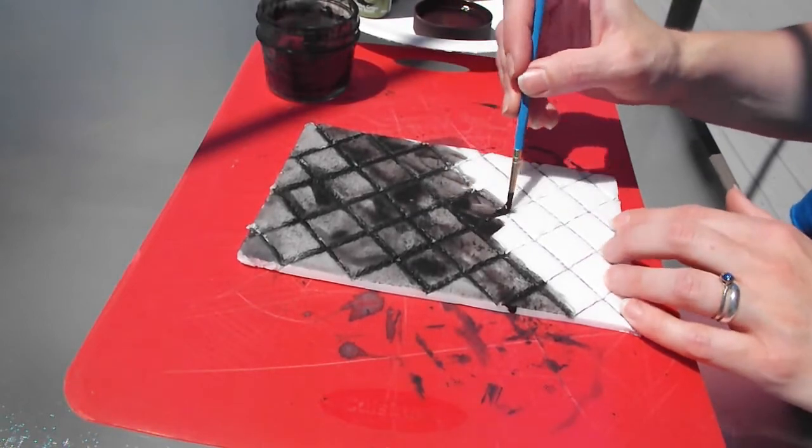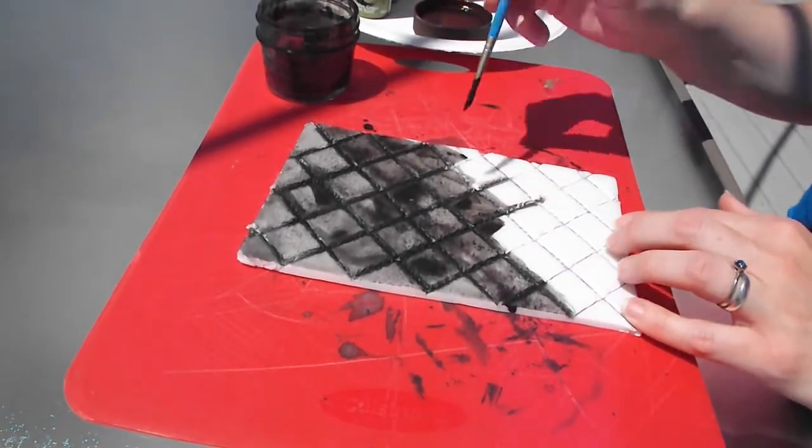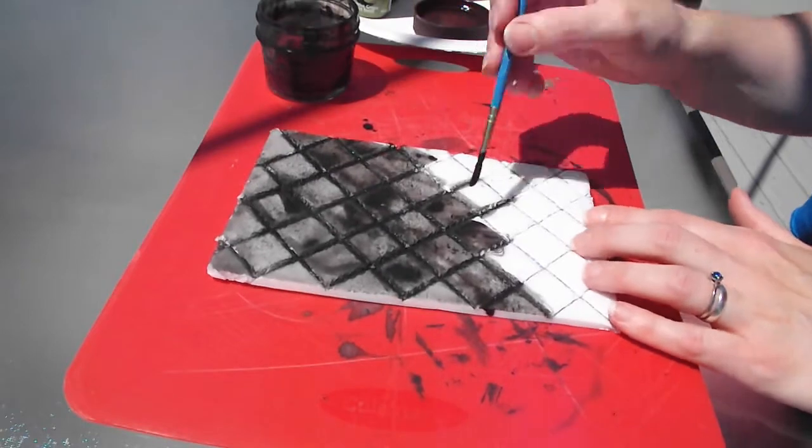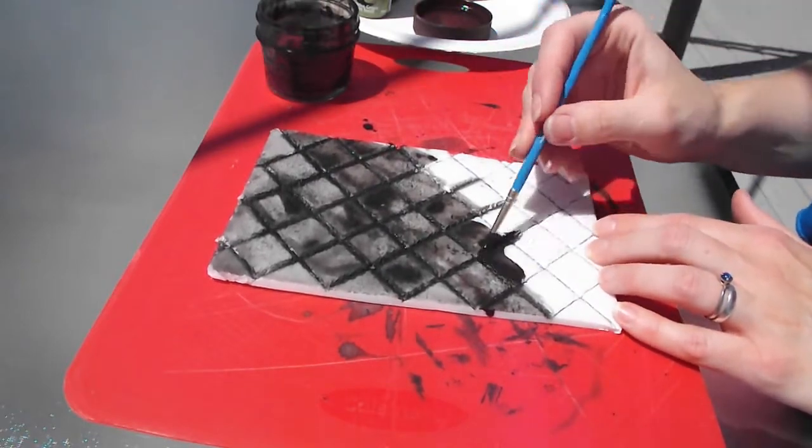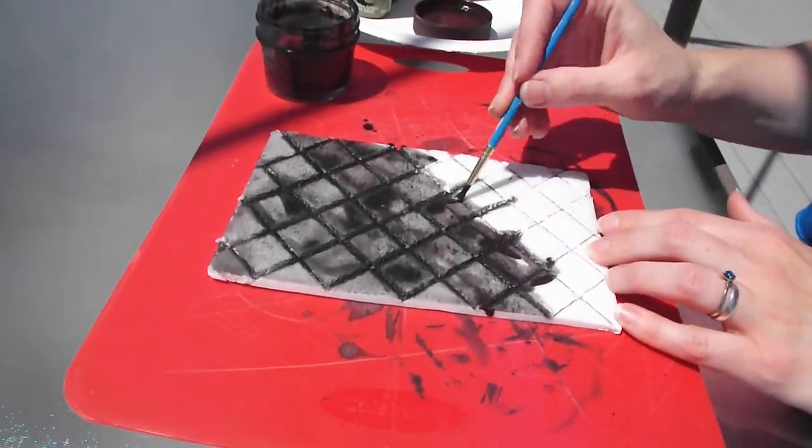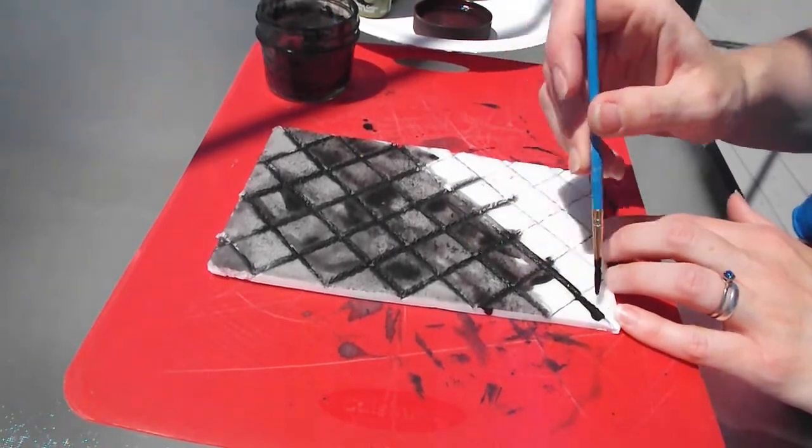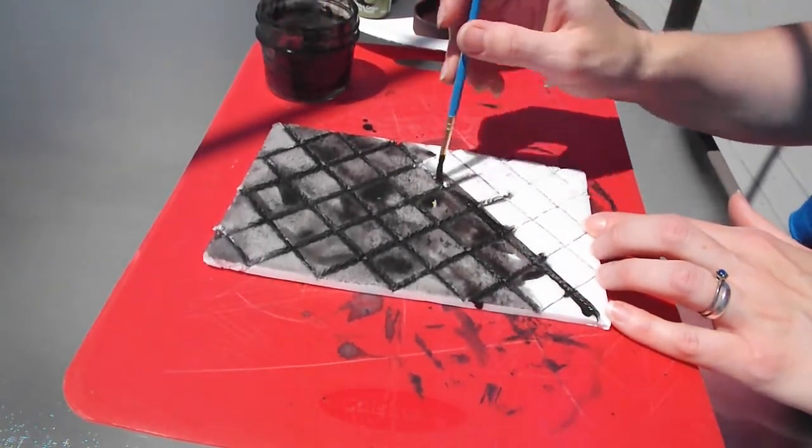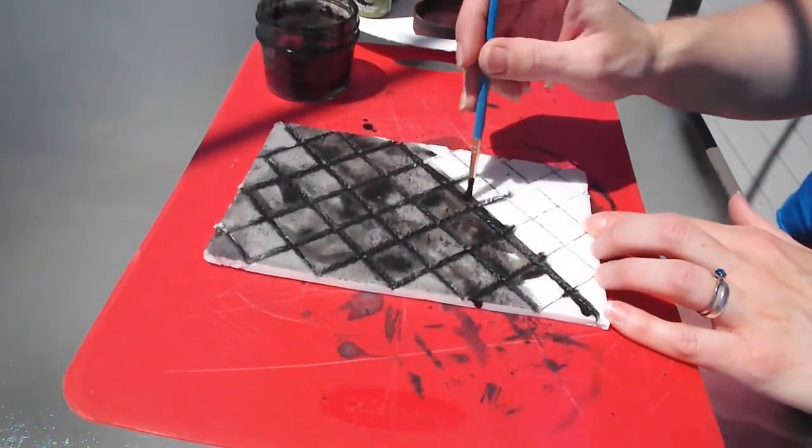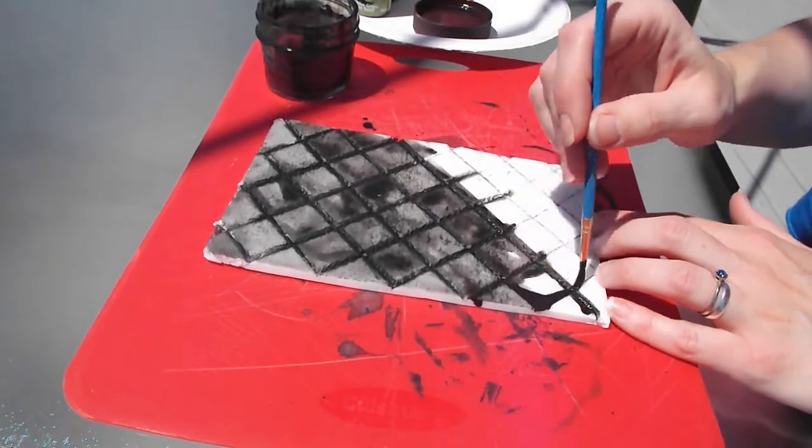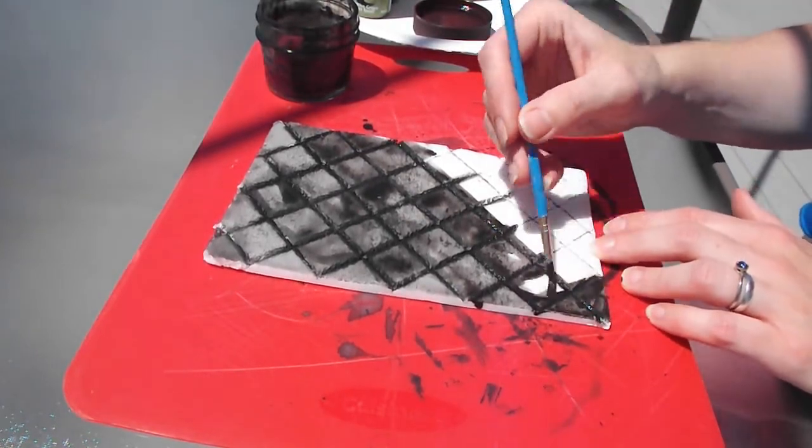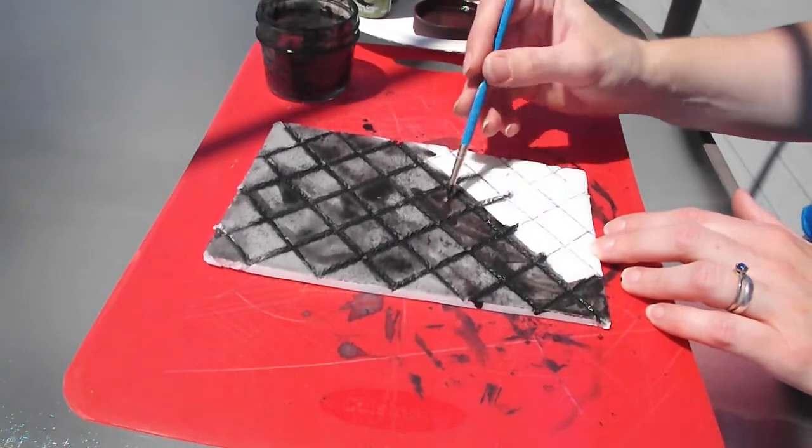So I'm just going to keep going through here. And then in this case, you do want to make sure that you allow your black wash to dry completely before adding in any further colors. Otherwise, it will start to bleed into the colors you want to use for your tiles and it's going to give it a very dark and muddy look.